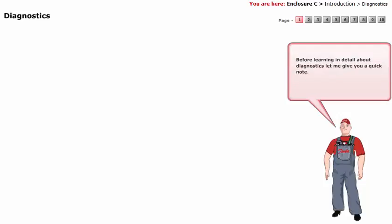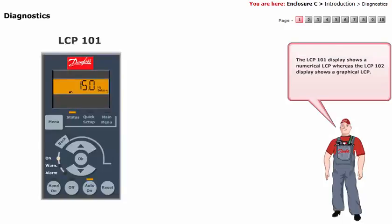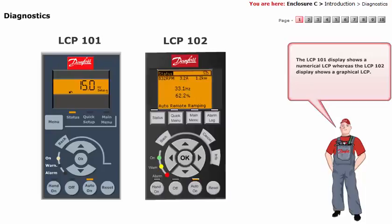Before learning in detail about Diagnostics, let me give you a quick note. The LCP-101 display shows a numerical LCP, whereas the LCP-102 display shows a graphical LCP.